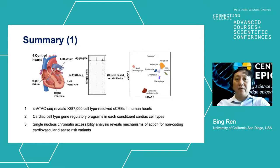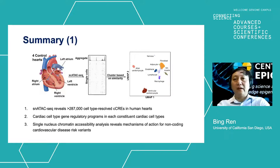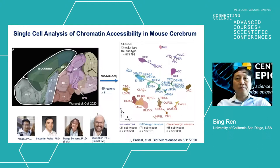Our study therefore showed how we can use single-cell chromatin accessibility assays to pinpoint not only the cell type where sequence variants could be active and affect biology, but also the genes and the regulatory elements in that particular cell type where these variants could affect transcription and cause phenotypes.